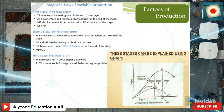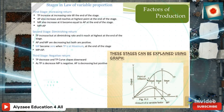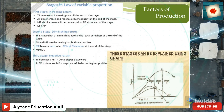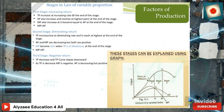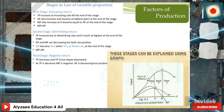In the second stage, total product increases but at a diminishing rate, reaching its highest point at the end of the stage. Average product and marginal product are both decreasing but remain positive; marginal product becomes zero and total product is at maximum. In the third stage, negative returns occur: total product decreases and the total product curve slopes downward. Marginal product becomes negative, while average product is decreasing but still positive.